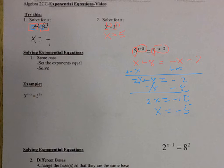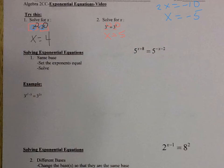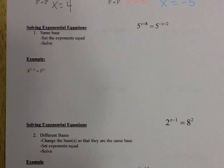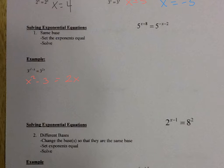Let's take a look at the second example over here on the left side. The same thing — I have 3 to the x squared minus 3 is equal to 3 to the 2x. They have the same base, so the exponents are equal to each other. That would mean x squared minus 3 is equal to 2x.